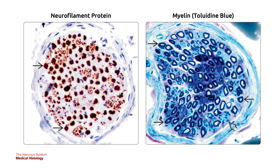On the left is an immunohistochemical stain for neurofilament protein showing large myelinated axons in a single black arrow that are strongly positive. The variable diameters of the staining axons reflect the different amounts of myelin surrounding each nerve fiber or axon. Unmyelinated axons are very narrow and difficult to detect. On the right, myelin stains dark blue in this toluidine blue-stained plastic section — a mixture of large and small diameter myelinated nerve fibers can be seen here.